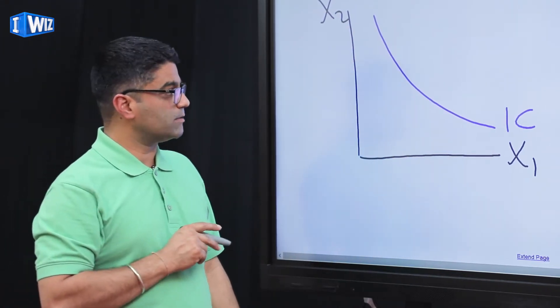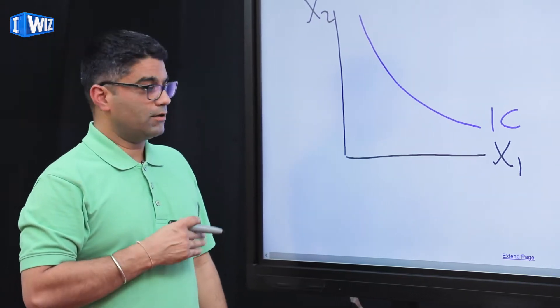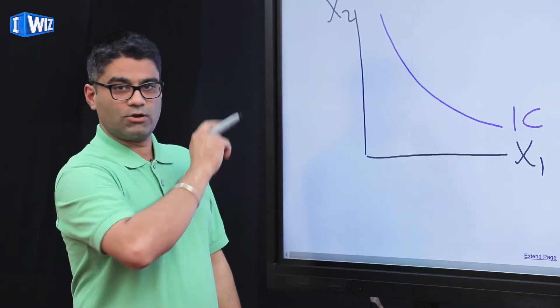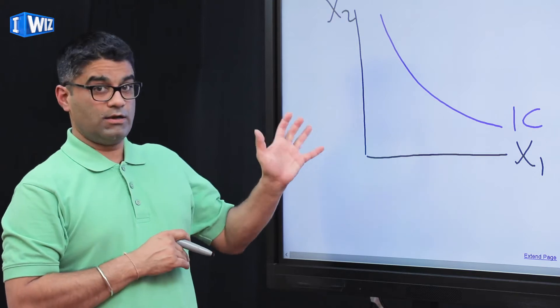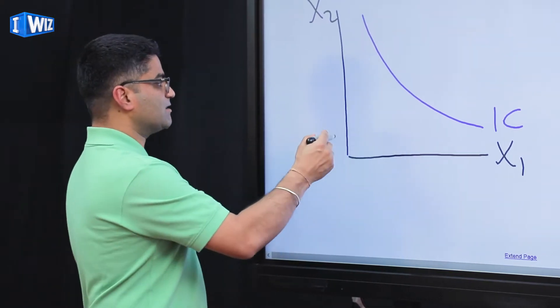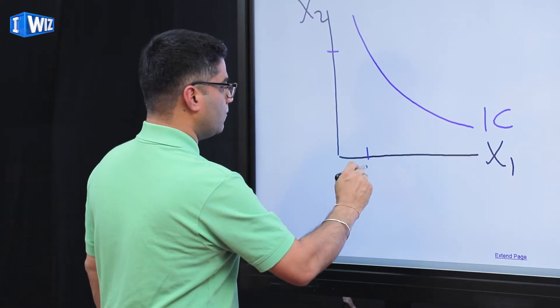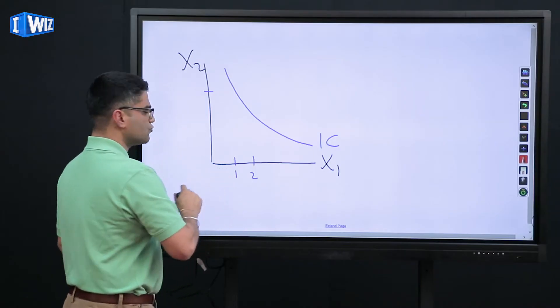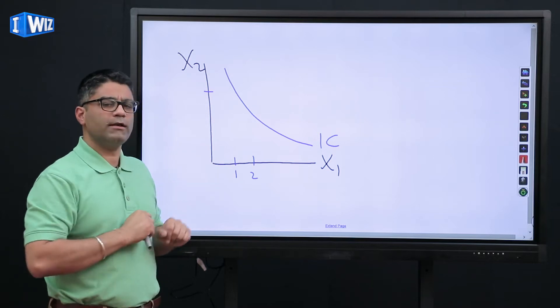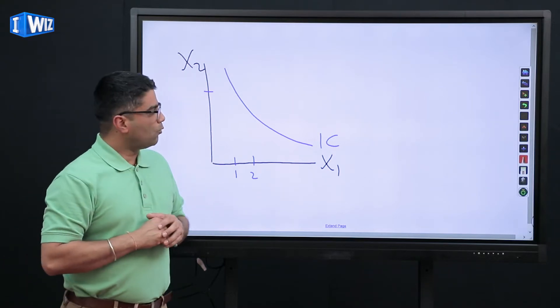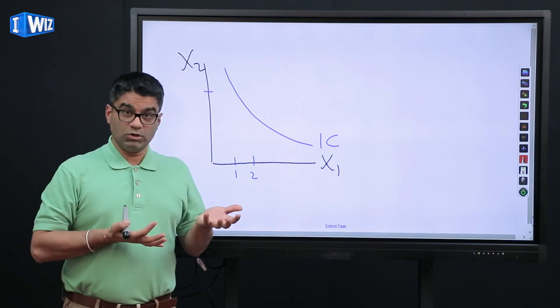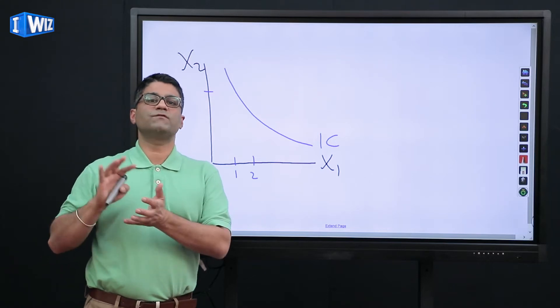And this goes back to the concept of diminishing rate of substitution, which again, click on the link if you're not comfortable theoretically. Now we're just putting it all graphically. Let's pick some points. If you are increasing a consumption of x1 from 1 to 2. Let me explain to you before I draw it.